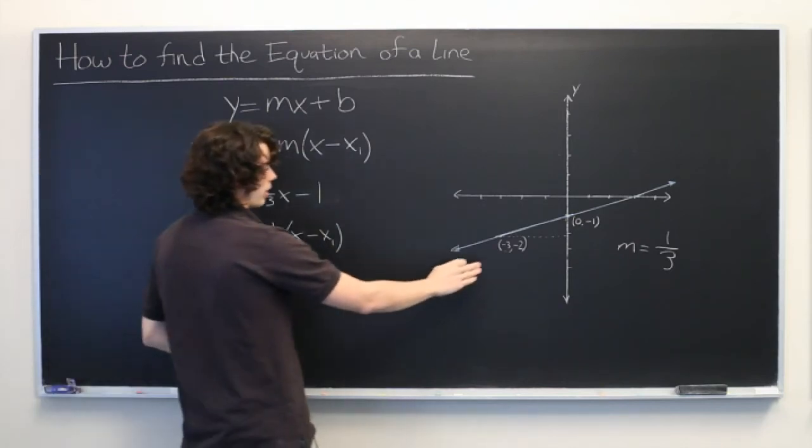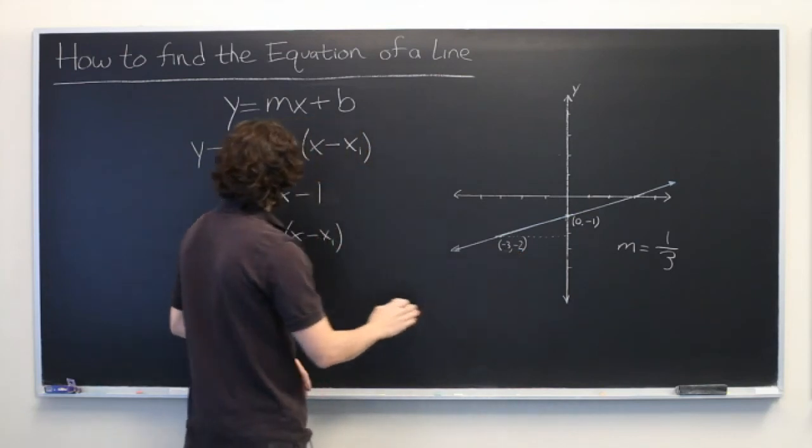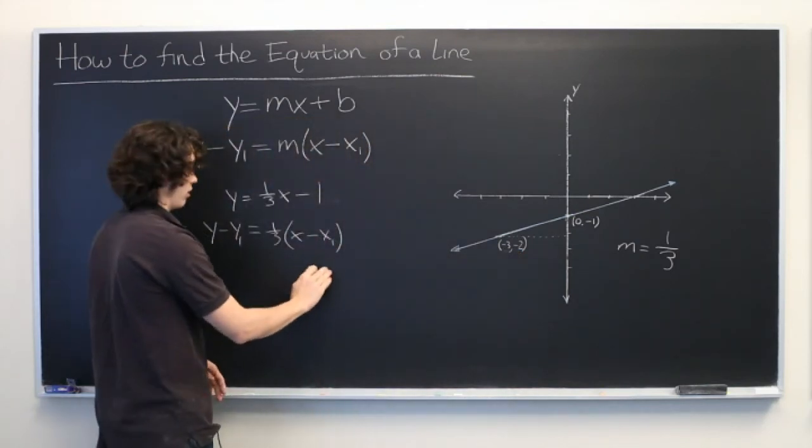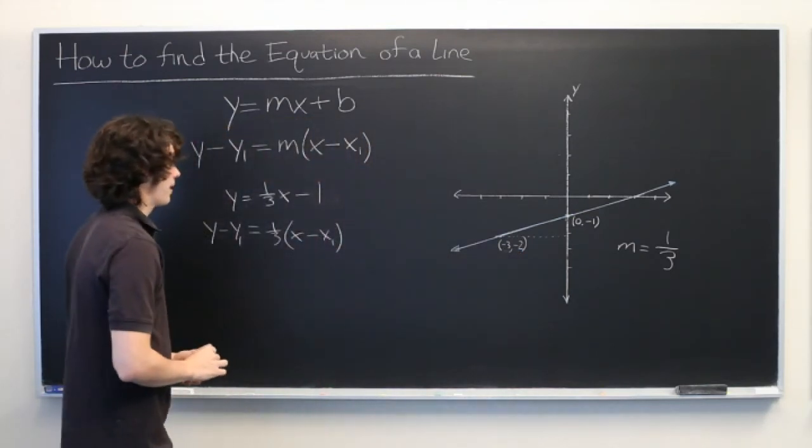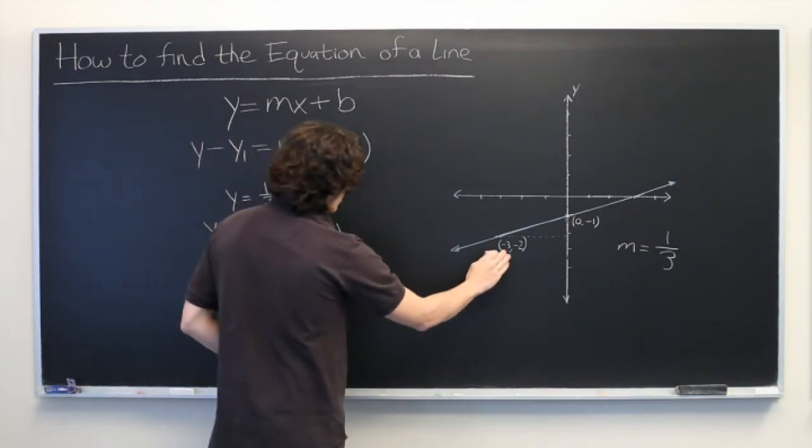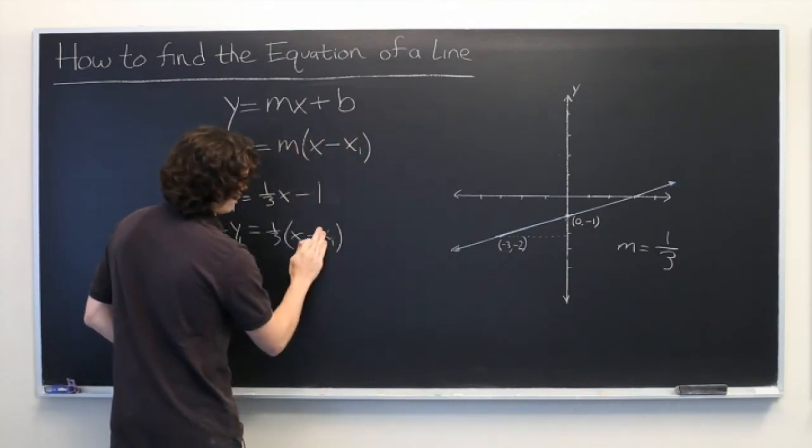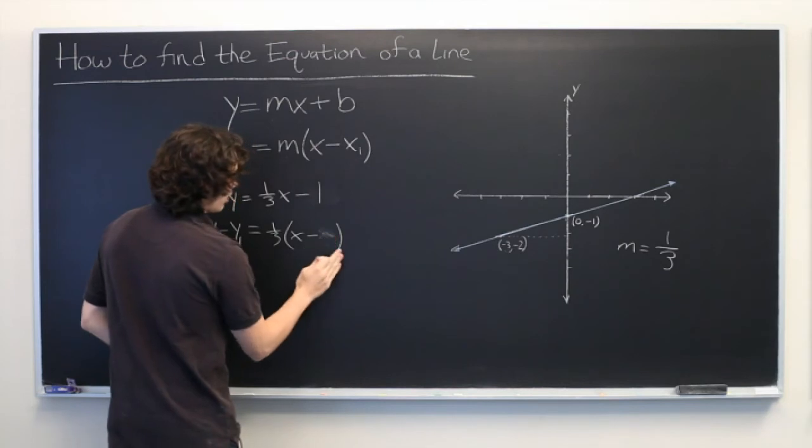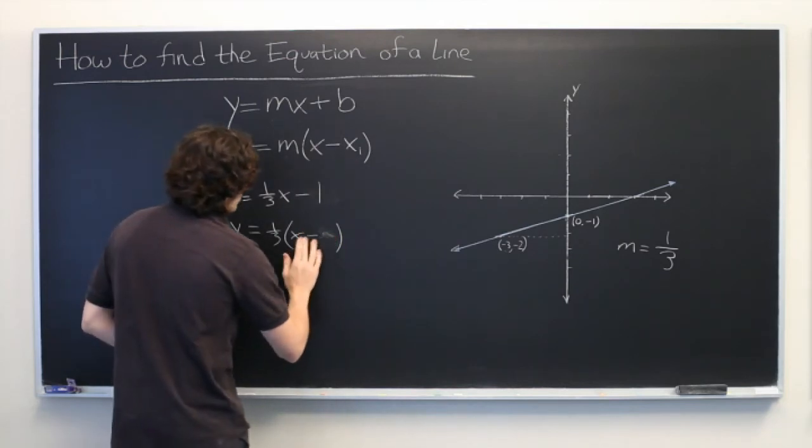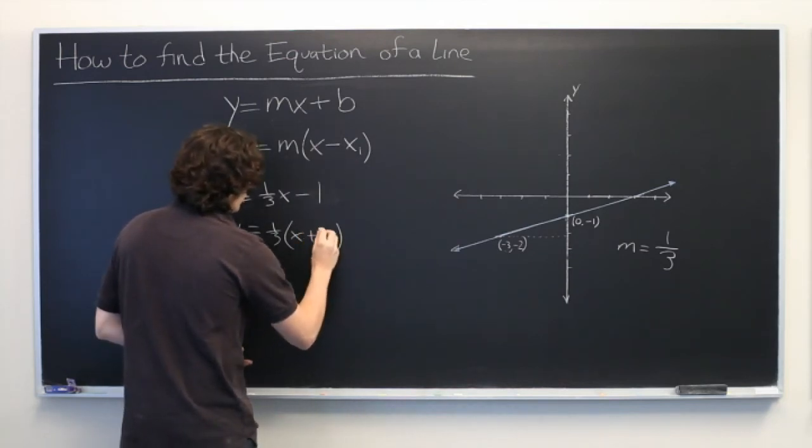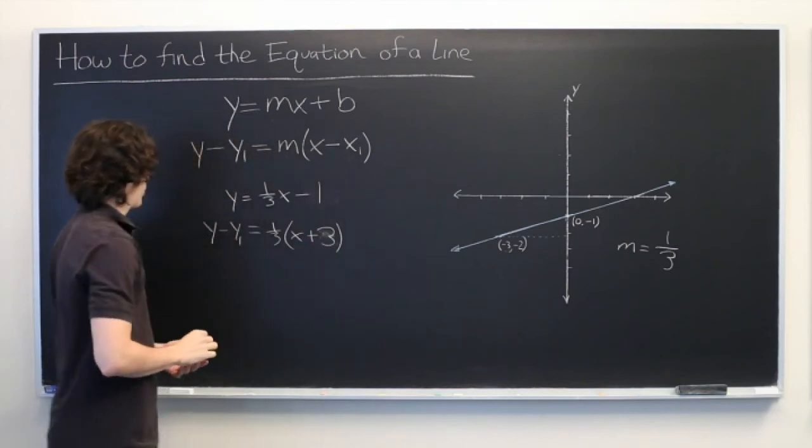Let's use this point that we know, (-3, -2), to fill in the rest of the information for this equation. We take our x-coordinate here and plug that in for x1. Minus negative 3 means it's going to be plus 3.